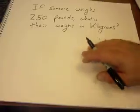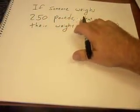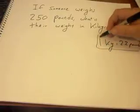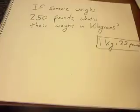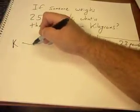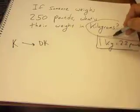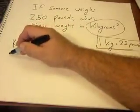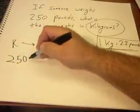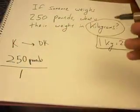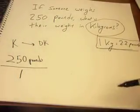Let's do a weight conversion. Say someone weighs 250 pounds — what is their weight in kilograms? You need to know your conversion factor, which you can look up: 1 kilogram is equal to 2.2 pounds. That's one people use all the time, particularly in the medical field. As I told you, I always start with what I know and go to what I don't know. We're looking for the weight in kilograms, so I start with 250 pounds over 1.